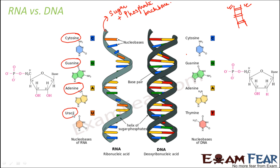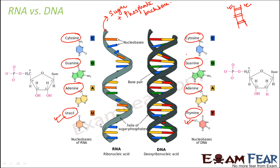Looking at the structures of cytosine and uracil, you can see they are pyrimidines, while guanine and adenine are purines. Similarly, in DNA there are also only four types of nitrogenous bases: cytosine, guanine, adenine, and thymine. The key difference is that uracil is exclusively present only in RNA and not in DNA, while thymine is present in DNA but not in RNA.